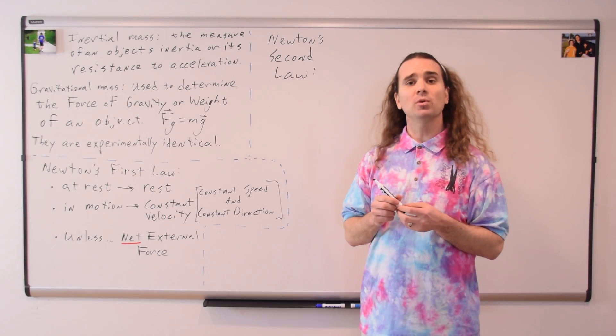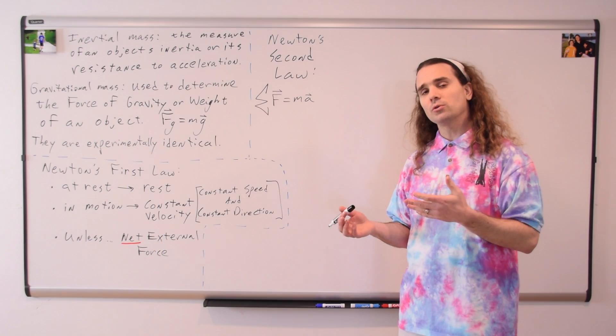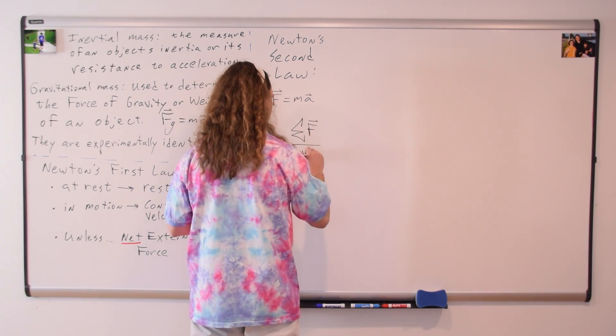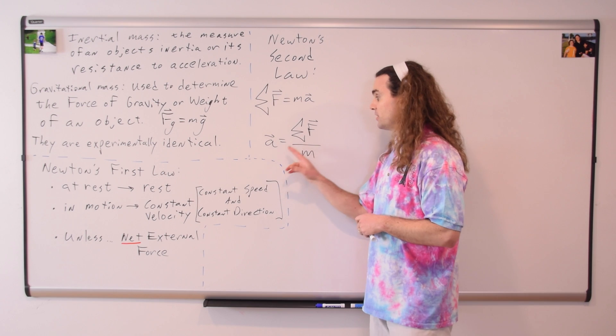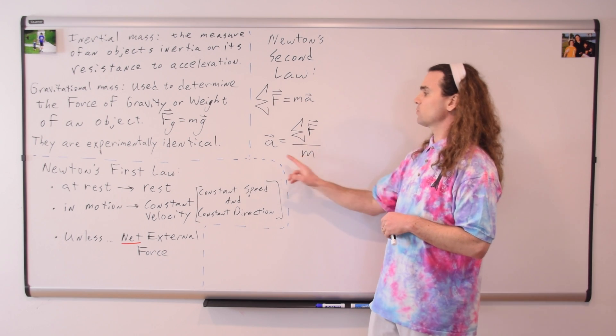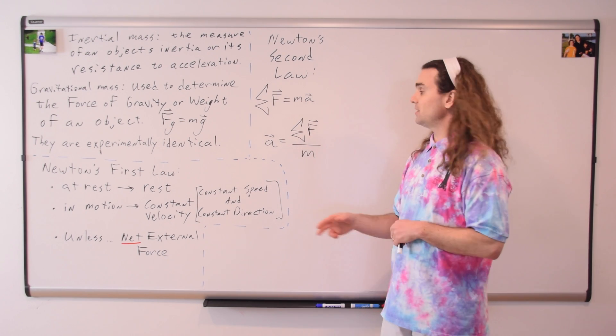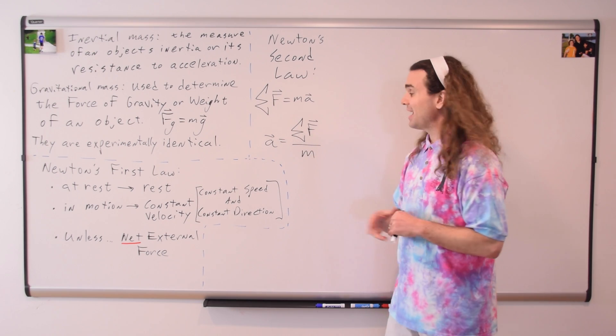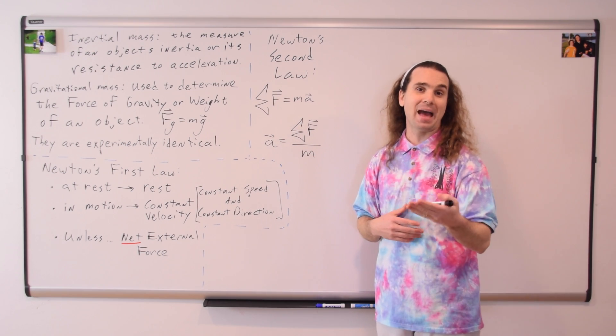Bobby, what is Newton's second law? Newton's second law: net force equals mass times acceleration, where both force and acceleration are vectors. However, it's rearranged on the AP Physics 1 equation sheet — acceleration equals the net force divided by the mass, where both acceleration and force are vectors. You can see the acceleration is directly proportional to the net force acting on the object and inversely proportional to the mass of the object.